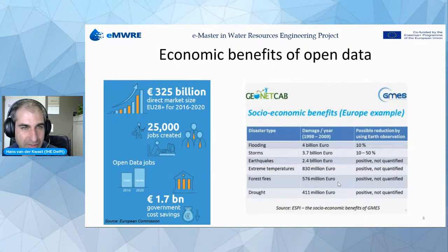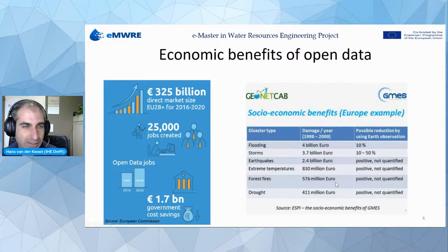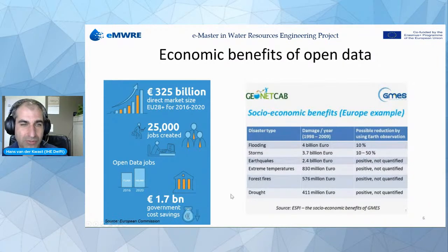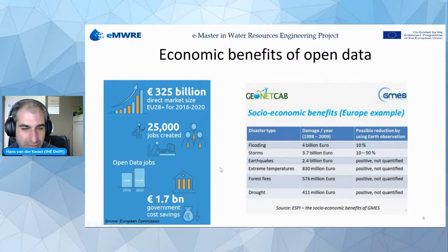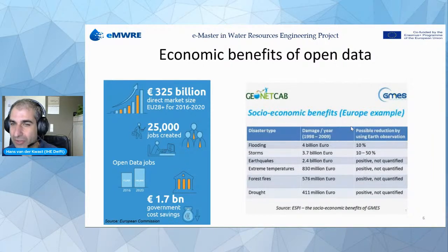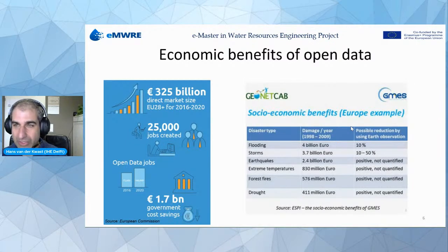Looking at the economic benefits from statistics from sources like the European Commission, open data creates many jobs and reduces costs for government, mostly in transactions of data because it's freely shared between different government agencies and related organizations. A lot of jobs are created by using open data in new services. There are also benefits from disaster risk reduction — for example, using remote sensing images and early warning systems, the data can be combined to reduce costs from disasters, help evacuate people on time, and improve conditions after the disaster.